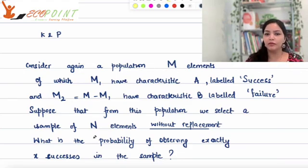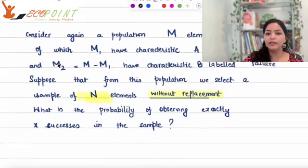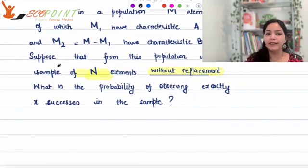Suppose that from this population, we select a number of capital N elements without replacement. Without replacement is something which is very important out here because that's what distinguishes this scenario from the scenario of binomial, because binomial, remember, is with replacement always, right?